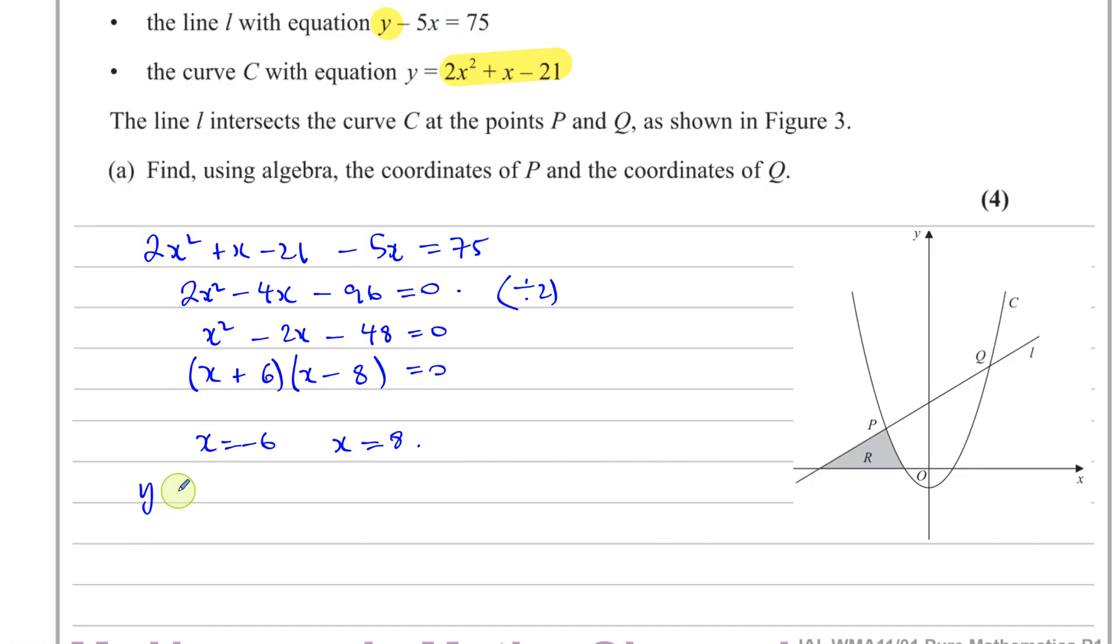Now we know that y minus 5x is equal to 75, which means that y is equal to 5x plus 75. So when x equals negative 6, y equals 5 times negative 6 plus 75, which is 75 minus 30, which is 45. So the coordinates of P are negative 6 and 45.